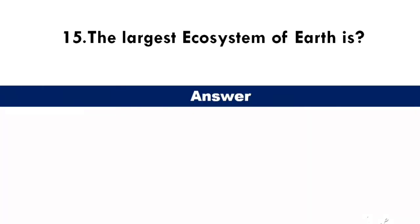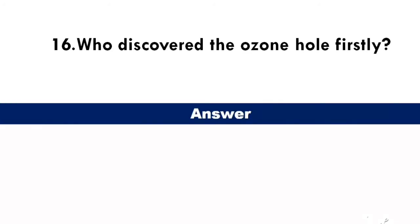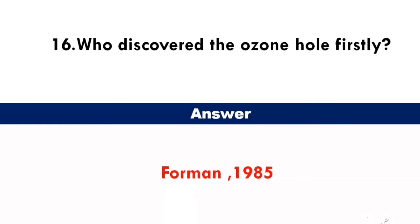What is the largest ecosystem of Earth? Answer: biosphere. Who discovered the ozone hole firstly? Answer: four men in the year 1985.